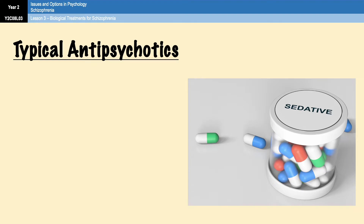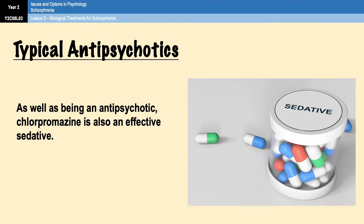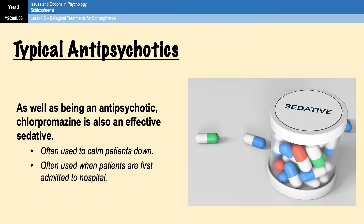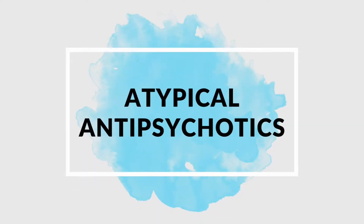As well as having antipsychotic properties, chlorpromazine in particular is also an effective sedative, and is therefore often used to calm individuals not only with schizophrenia but also with other conditions. This is often done when patients are first admitted to hospital and are either very anxious or are potentially in the middle of a psychotic break. Okay, so that was your typical antipsychotics.